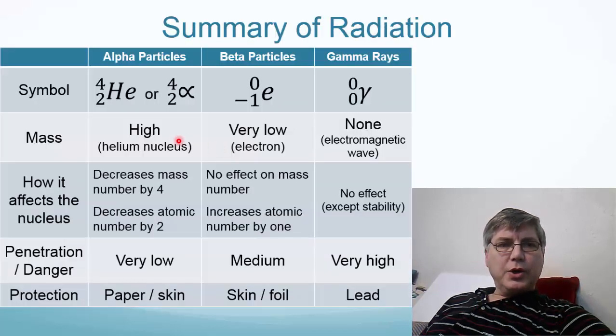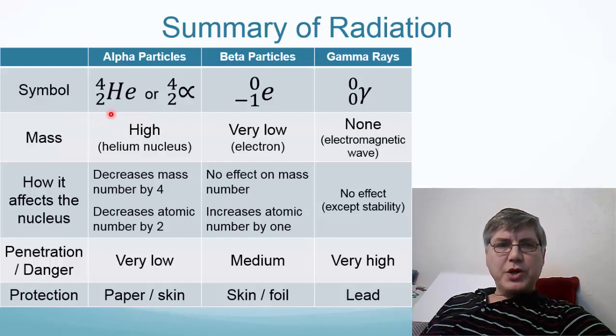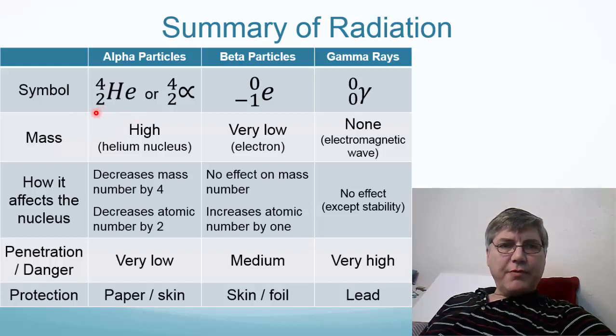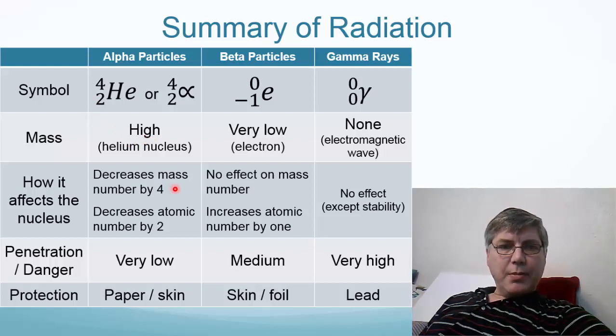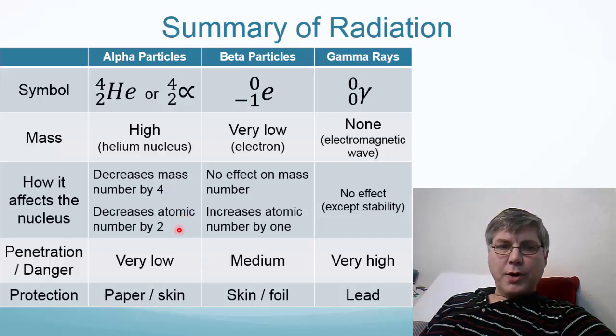Before we start, let's take a look at something we looked at before and just summarize the types of radiation that we have. The first type is alpha radiation, symbolized by 4 over 2, but usually when we're writing nuclear equations, we use the helium nucleus with the 4 for the mass number and 2 for the atomic number because that's what an alpha particle is. It has a high mass because it's a helium nucleus, and when it's emitted by the nucleus of an atom, its mass goes down by 4 and the atomic number goes down by 2.